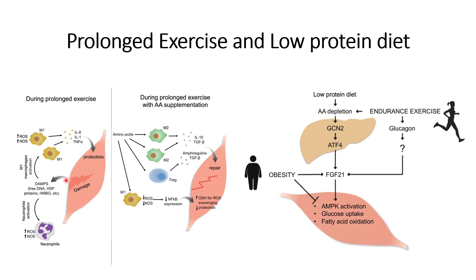The objective of prolonged exercise should be to reduce this DAMP formation, so that the immune response and the inflammation caused at the site of damage can be reduced. In order to do so, amino acids can be supplemented during prolonged exercise. What this does is it will try to suppress the immune response — specifically, it will suppress the M1 type macrophages.